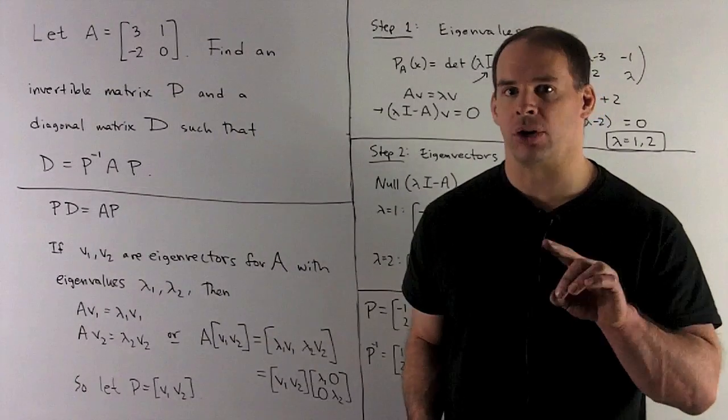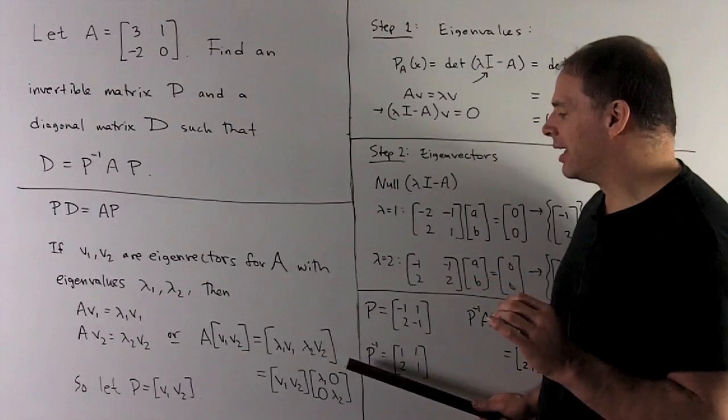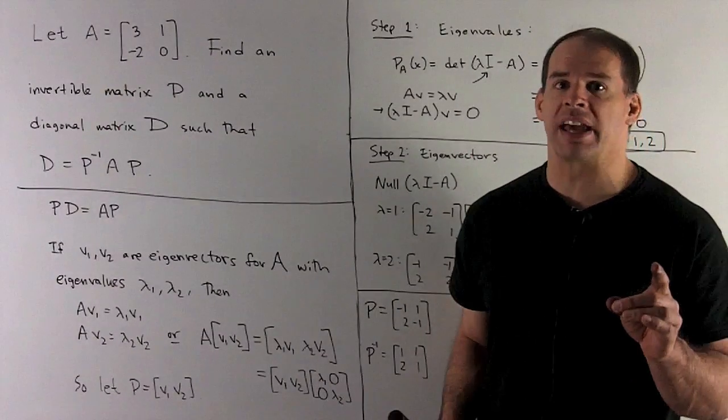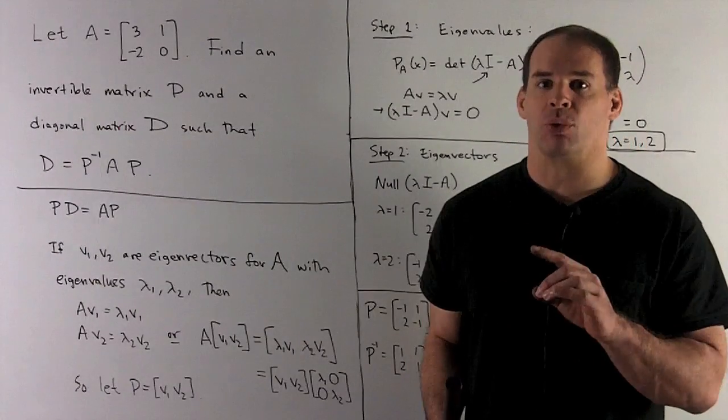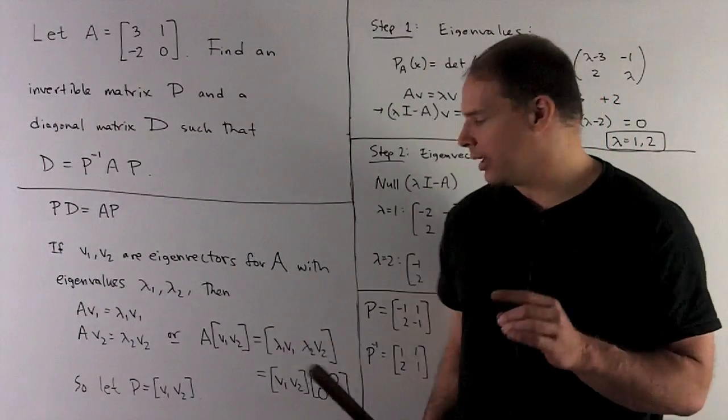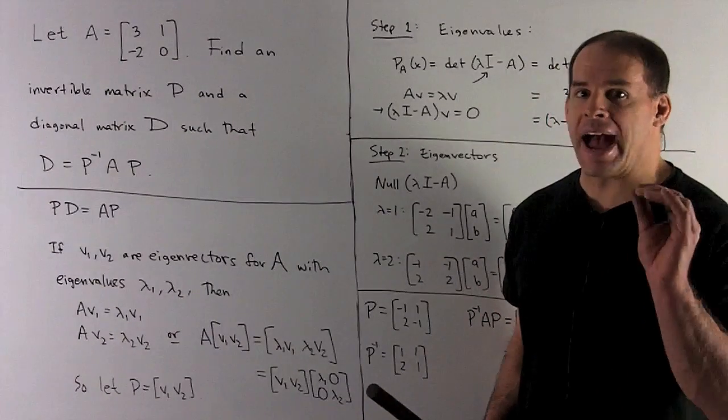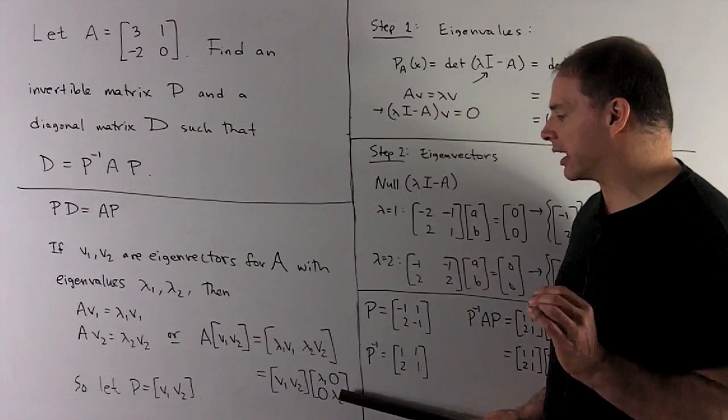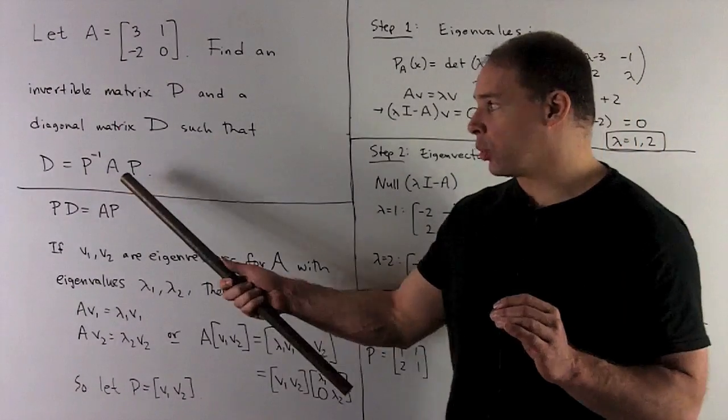It's a little counterintuitive, but if you think about it, if I put lambda 1 and lambda 2 on this side, that's how I multiply the columns by a scalar. If I put lambda 1 and lambda 2 on the other side, that multiplies the rows by a scalar, and that's going to play havoc with what we're trying to do here. So the diagonal matrix goes on the other side. This is what we want because that's how our equation comes out.